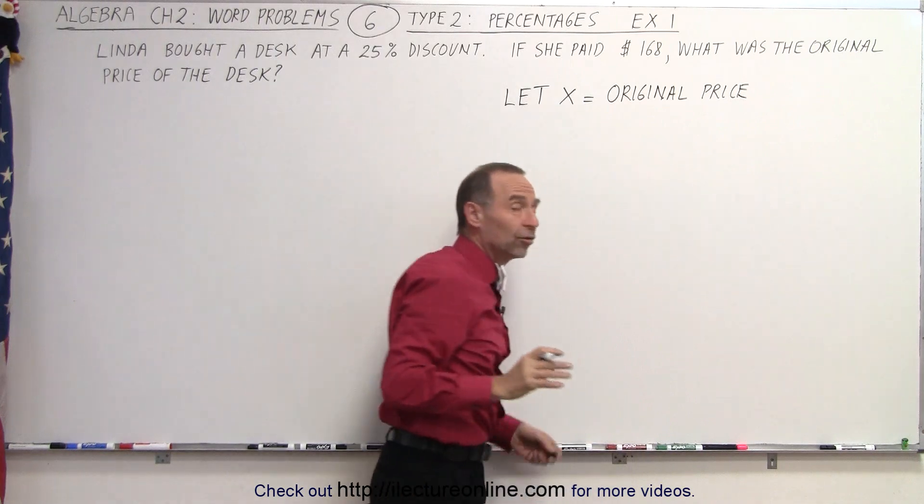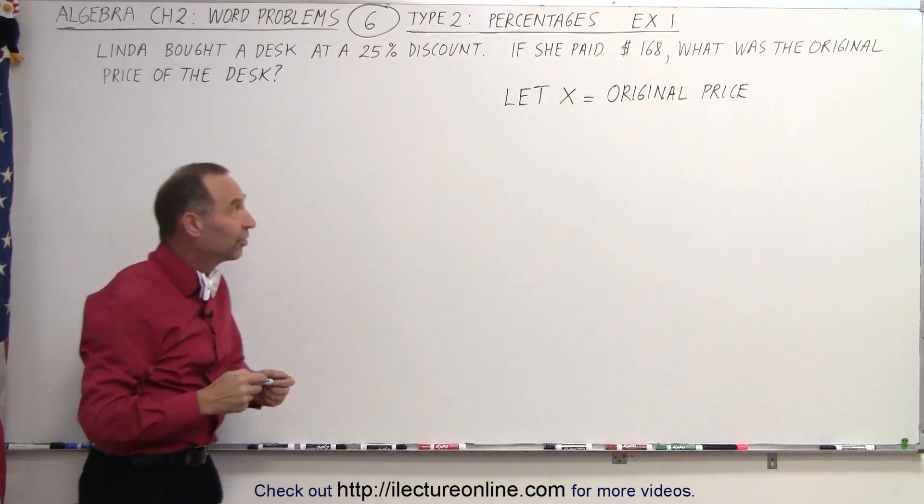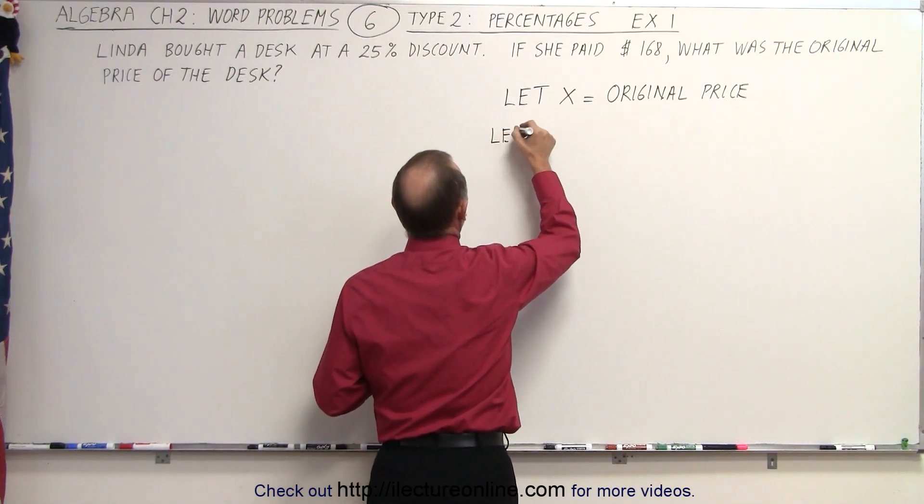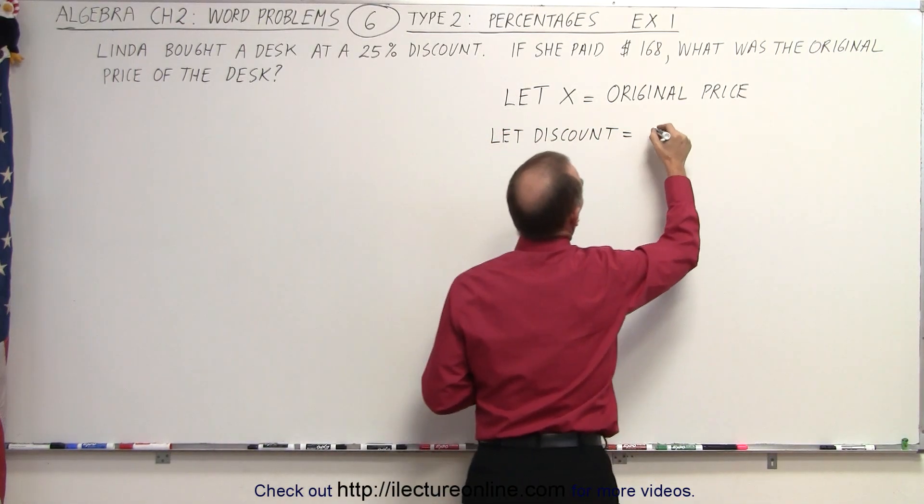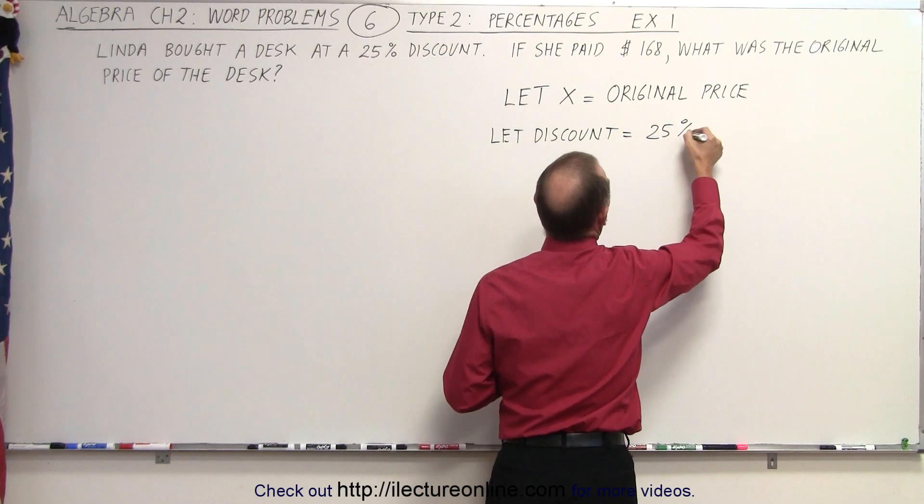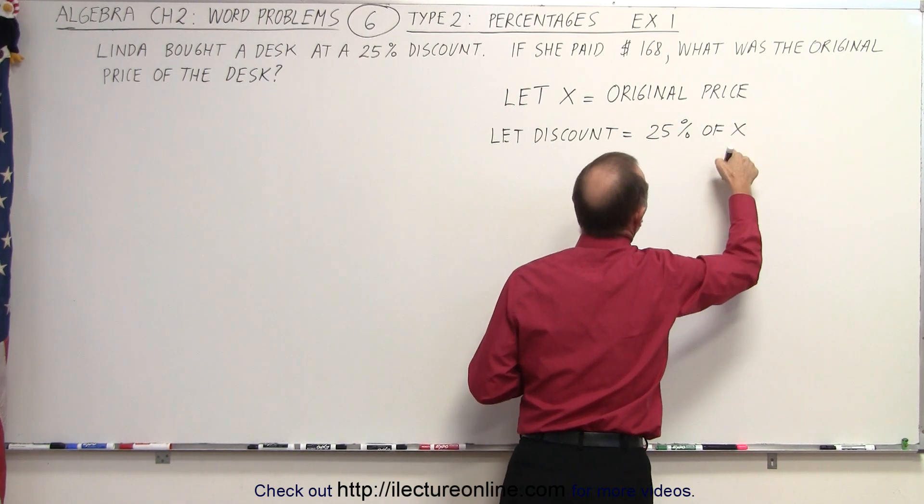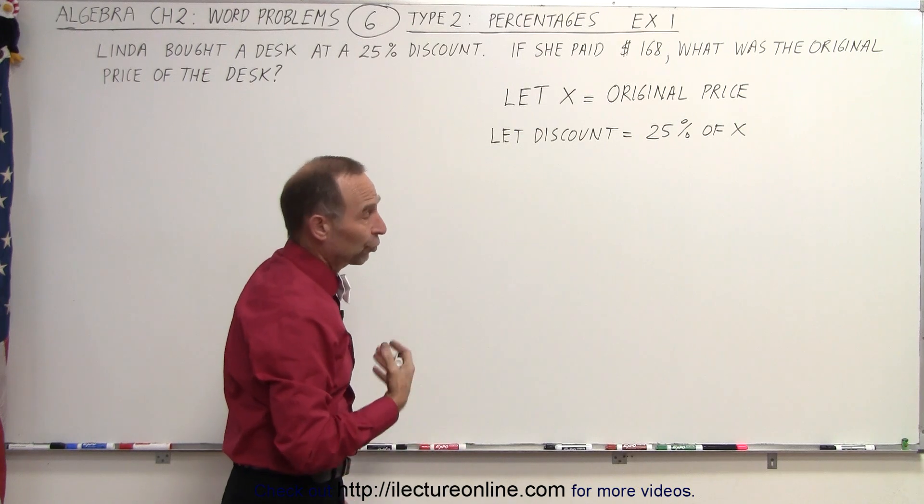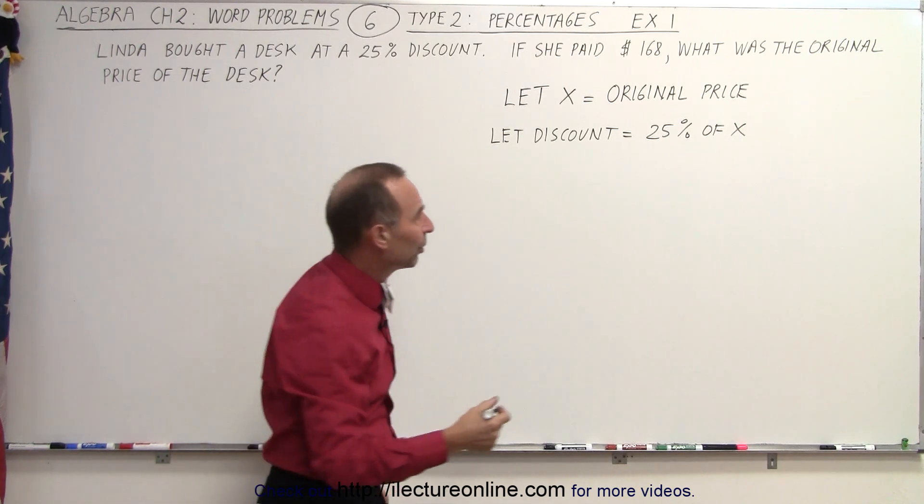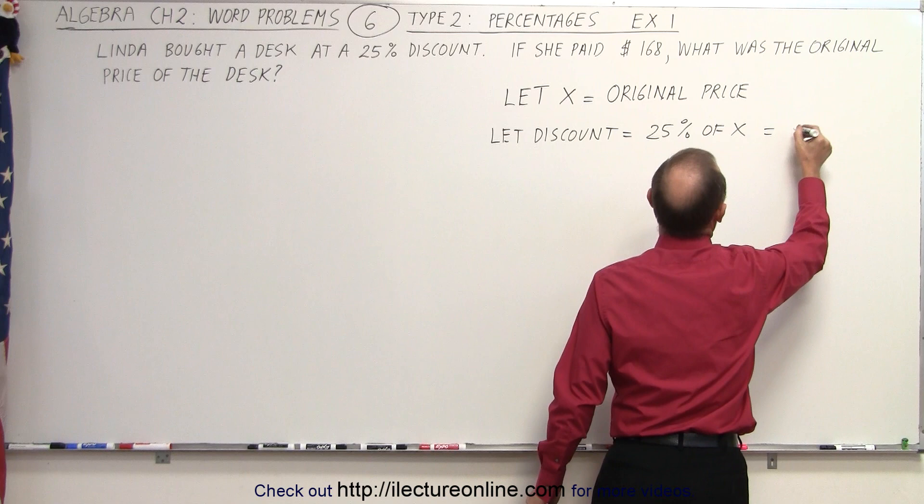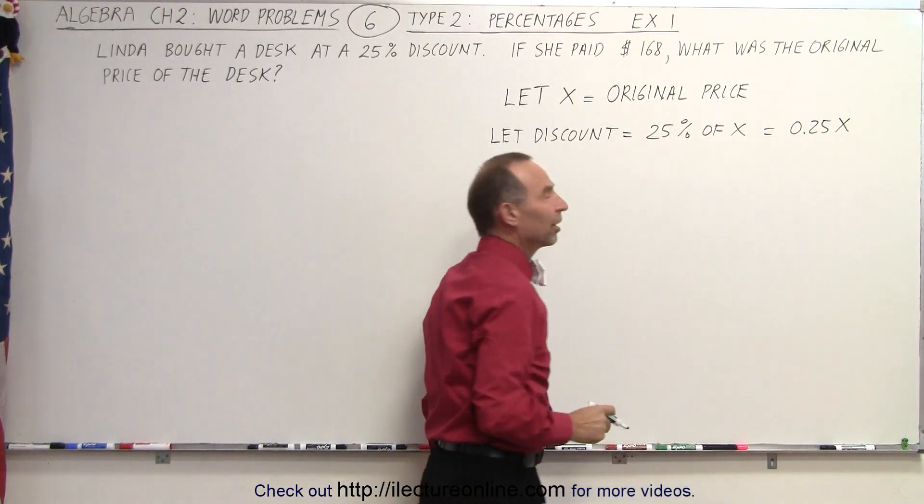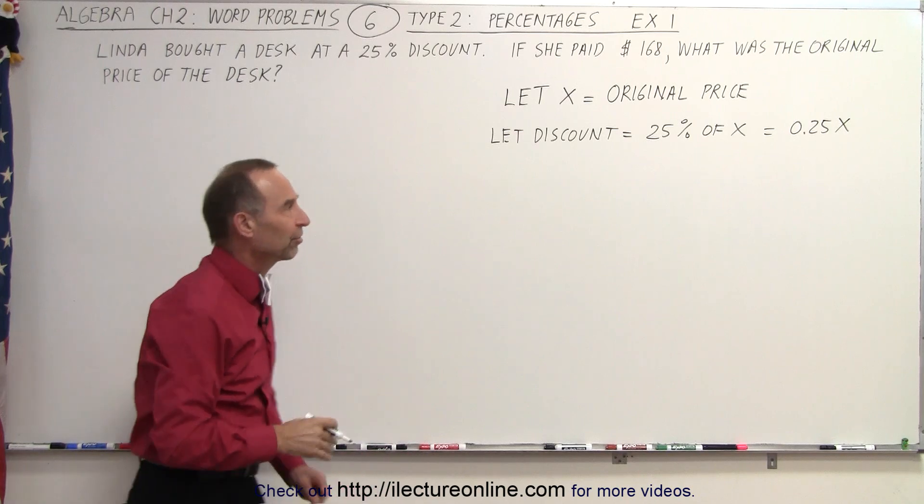And now we can describe the discount in terms of x. So we can say that let the discount equal 25% of x, since x was the original price and the discount is 25% of that. And of course 25% can be turned into a decimal, so that can be written as 0.25 times x. So there's the discount expressed in terms of x.